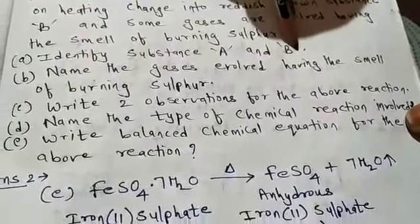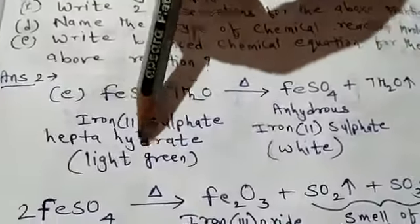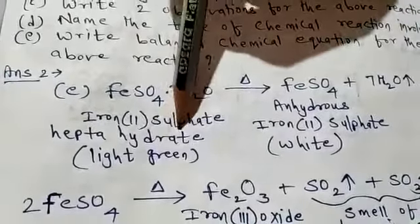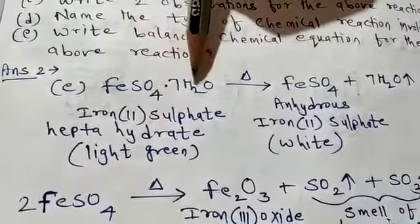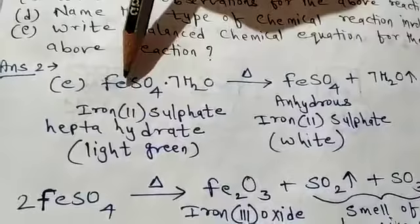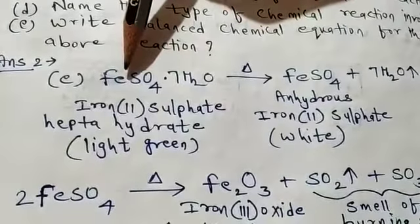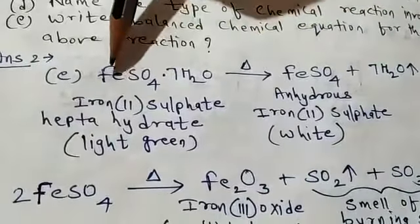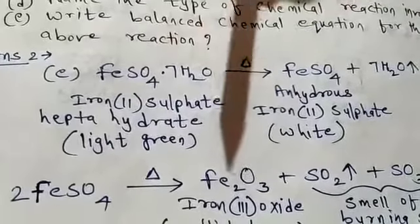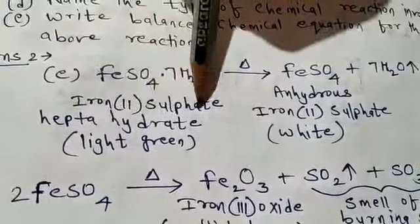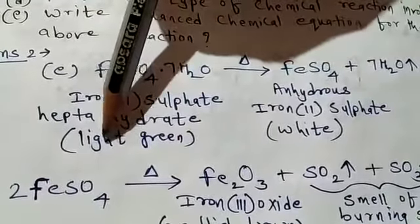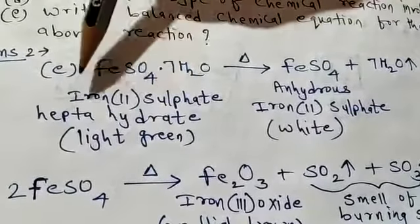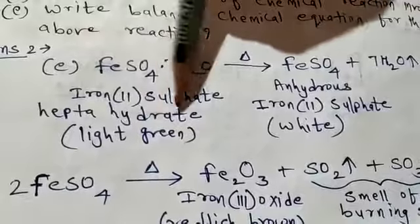Identify substance A and B. Substance A is the light green colored crystal — that is iron(II) sulfate heptahydrate. This is also called ferrous sulfate heptahydrate, because when valency 2 is used, we say ferrous; if valency 3 is used, we say ferric. So substance A — the light green colored crystal — is iron(II) sulfate heptahydrate, also called ferrous sulfate heptahydrate.